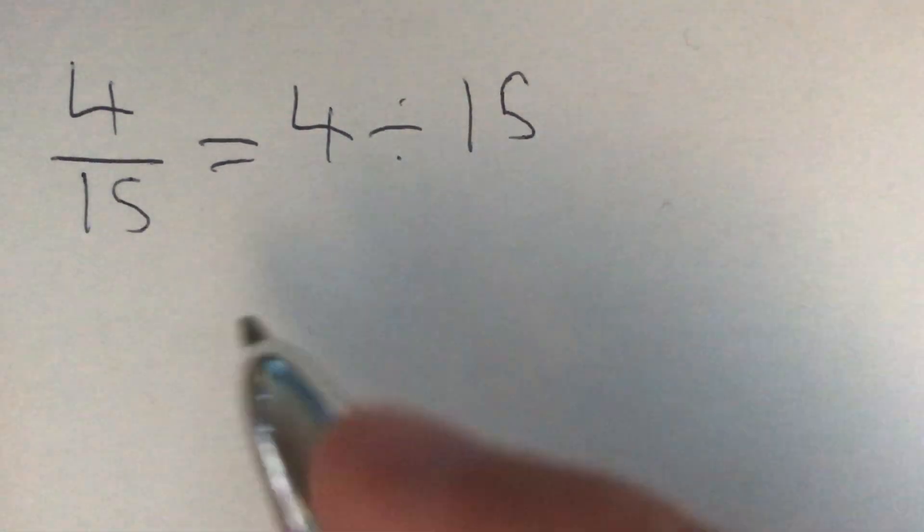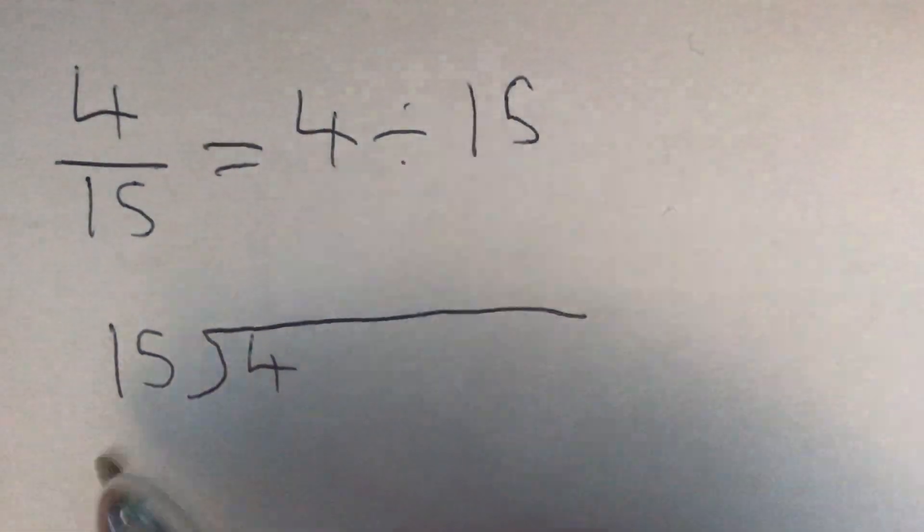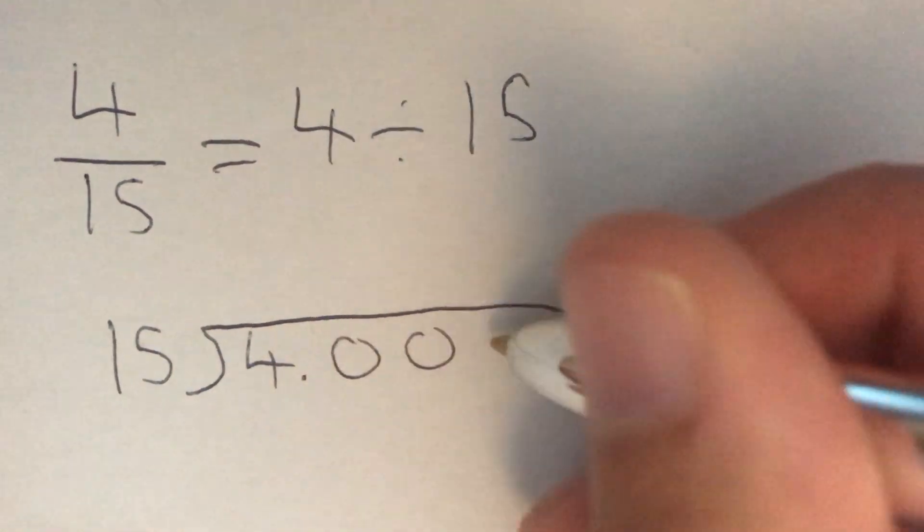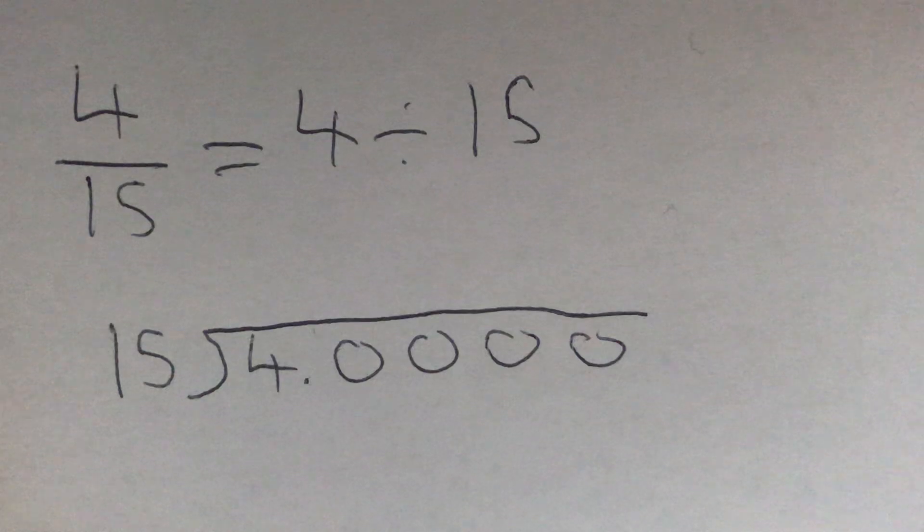So we can work out this 4 divided by 15 using the bus stop method. We put the 15 on the outside, the 4 on the inside, and then because we're going to get a decimal answer, we can put in some placeholder zeros, getting ready for that into our decimal places.